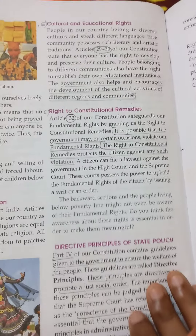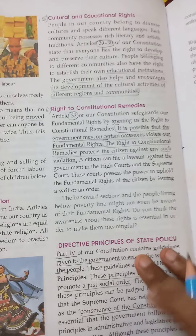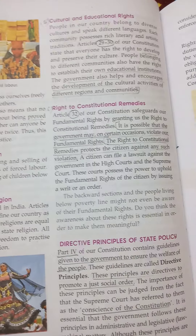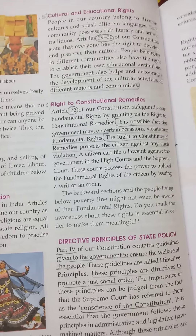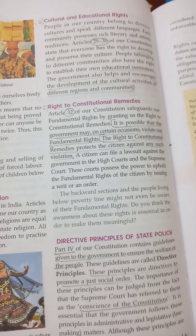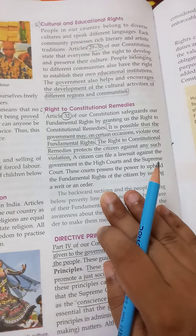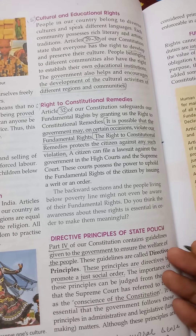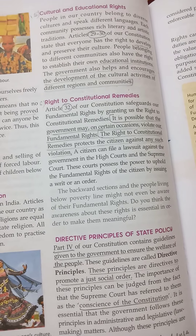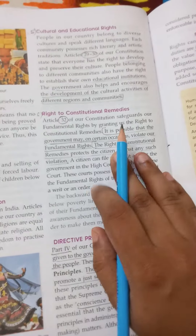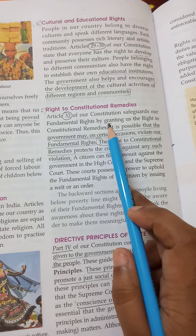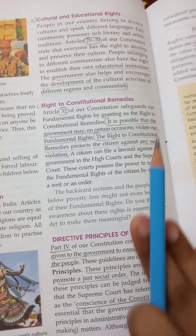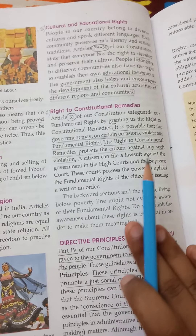The sixth fundamental right is the Right to Constitutional Remedies, and it is the most important fundamental right. The government and constitution have guaranteed you many rights, and if any of your rights are violated, you can go to court. Article 32 of our constitution safeguards our fundamental rights by granting us the right to constitutional remedies — this right gives you actual protection if any of your fundamental rights are violated.